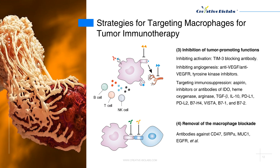4. Removal of the macrophage blockade: Interactions between CD47 on tumors and SIRP-alpha on macrophages help tumor cells evade macrophage phagocytosis. Antibodies against CD47 or SIRP-alpha could remove the blockage. In addition, antibodies against MUC1 and EGFR inhibit SIRP-alpha.